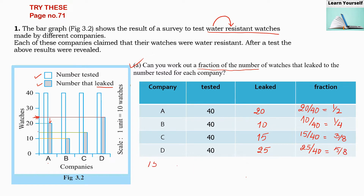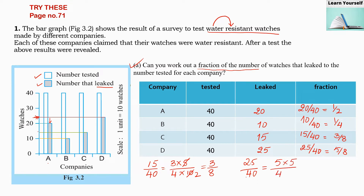Let us understand the simplification of 15/40. Here 15 is 3 × 5 and 40 is 4 × 10, so we get 3/8 since 4 × 2 = 8. Similarly for 25/40: it is 5 × 5 divided by 4 × 10, giving 5 over 8. That is how we get these two simplifications from 15/40 and 25/40.